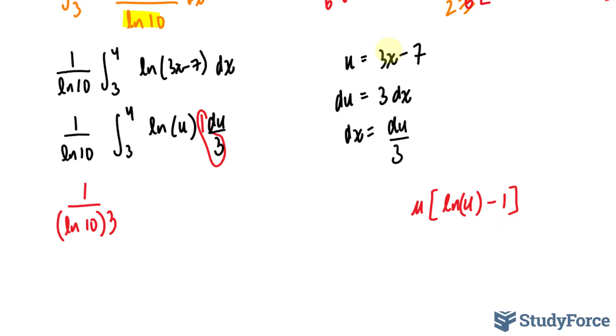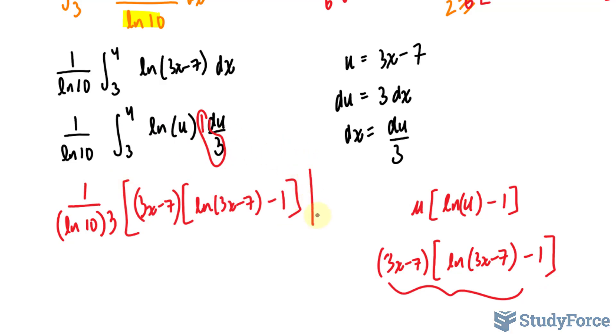In our case, u is 3x minus 7. So I'll replace that with 3x minus 7. And I'll replace this with 3x minus 7 minus 1. I'll take this now and replace all of this with the following between the bounds 3 and 4. The rest is up to our calculator. Let's use our calculator now.